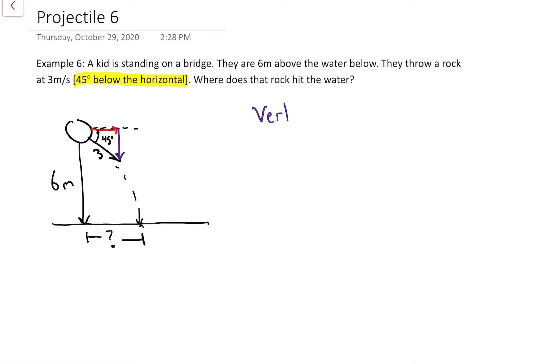We're going to start with the vertical since I'm asked for the horizontal as my final thing. Its displacement is 6 meters and it fell downward. Gravity is acting on it pulling downwards at 9.8. We threw it on a funny angle, it's a sine relationship again, 3 sine 45 this time, but thrown downward.